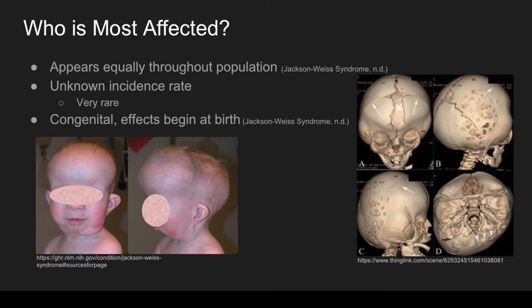We do know that Jackson-Weiss Syndrome is congenital, meaning that the effects begin at birth, and the effects will last the person throughout their lifetime. In the image below is a baby who is affected by Jackson-Weiss Syndrome — you can see the enlarged forehead. And in the image to the right is a 3D representation of the skull of one who is affected by Jackson-Weiss Syndrome.